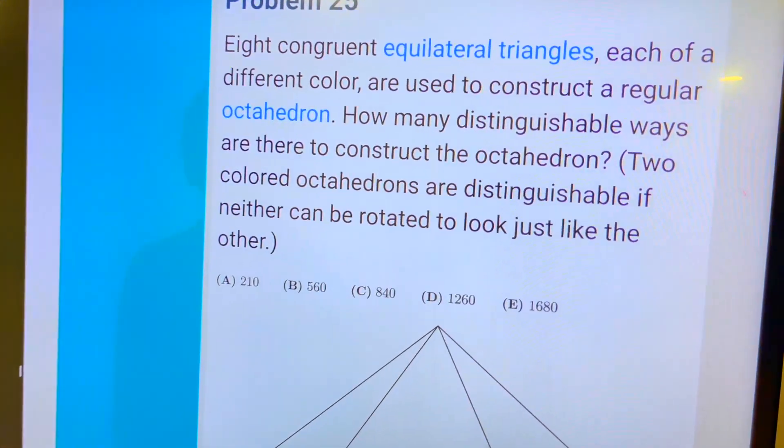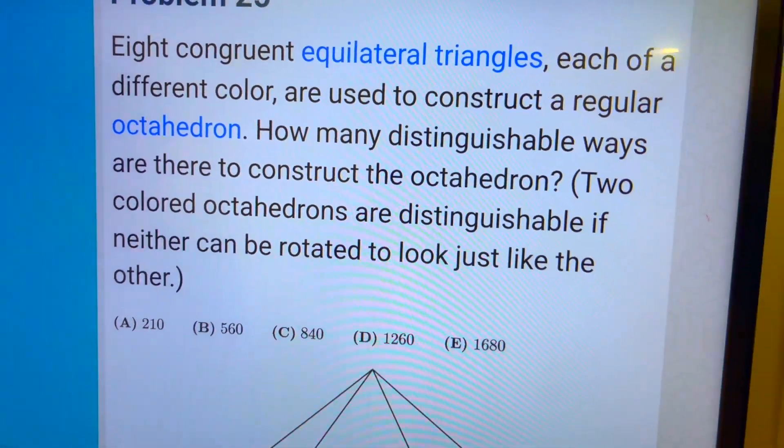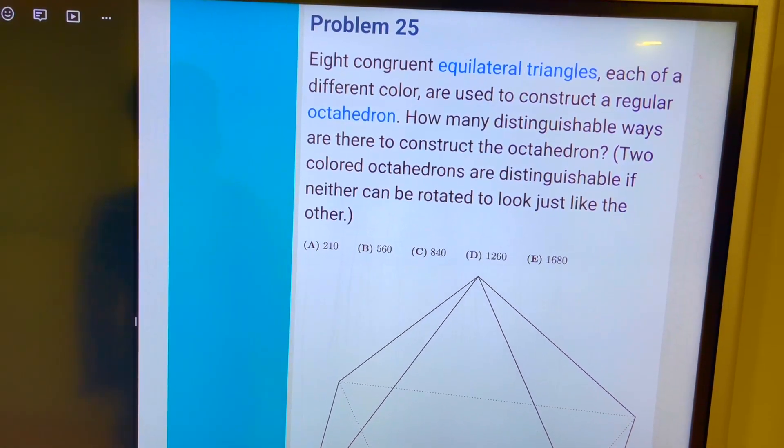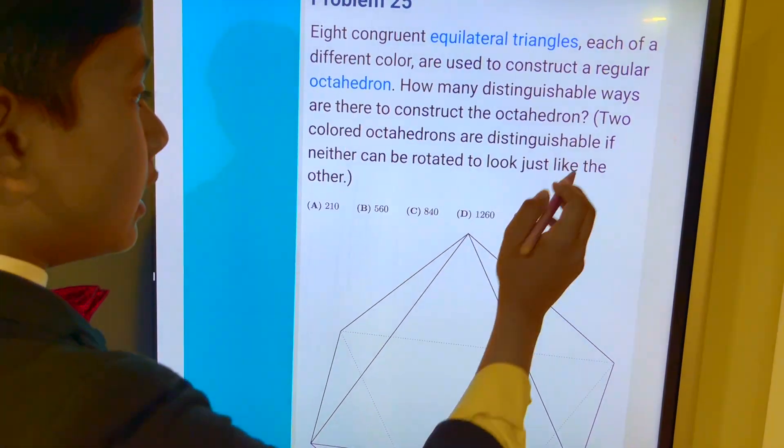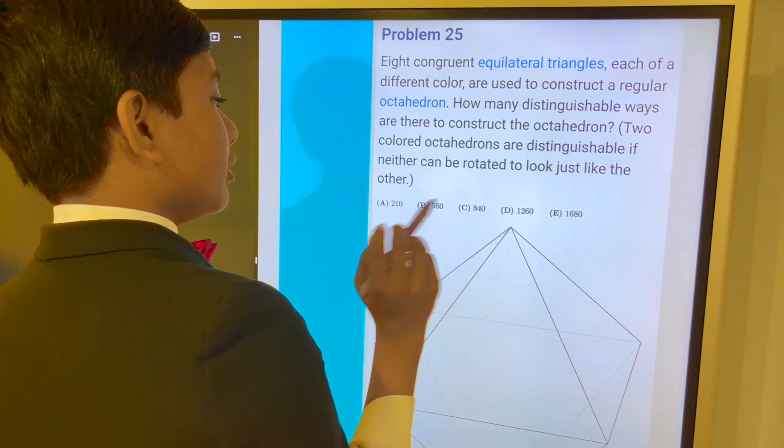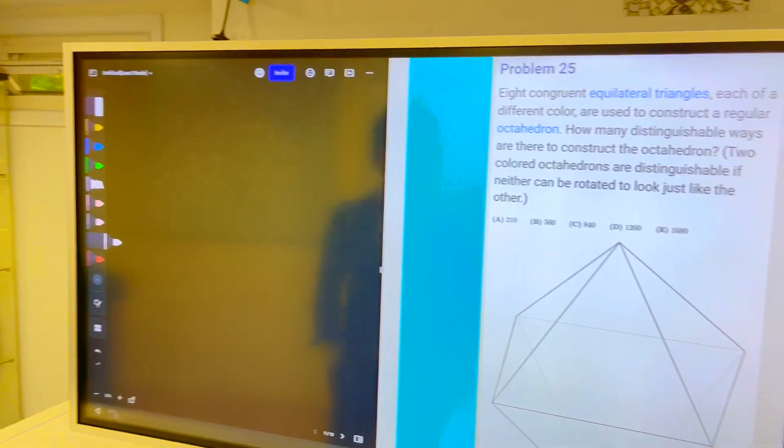Eight congruent equilateral triangles, each of a different color, are used to construct a regular octahedron. How many distinguishable ways are there to construct the octahedron? Two colored octahedrons are indistinguishable if neither can be rotated to look exactly like the other.